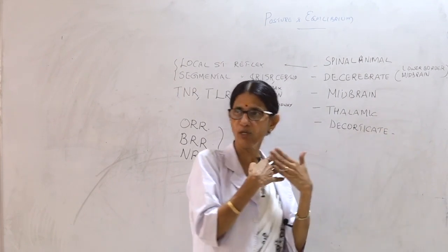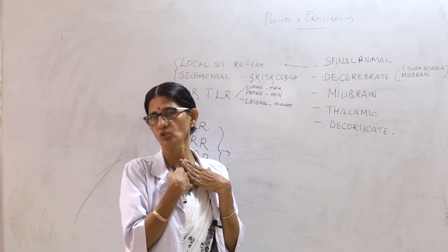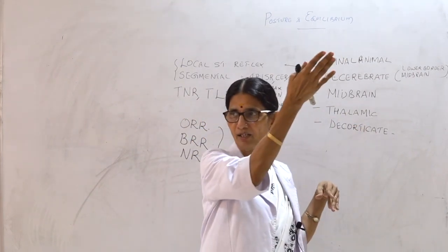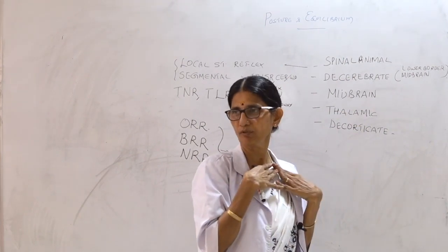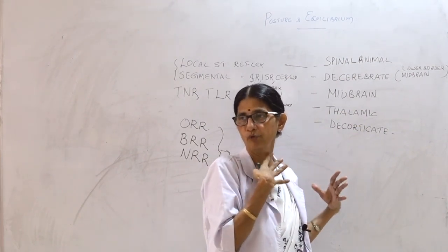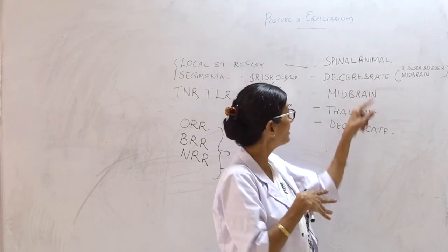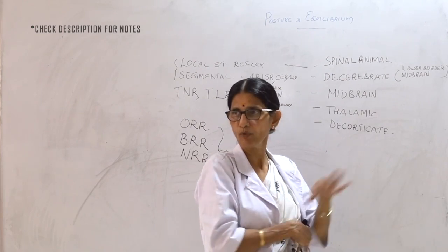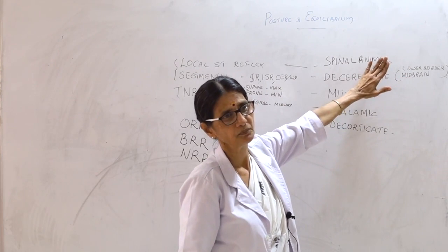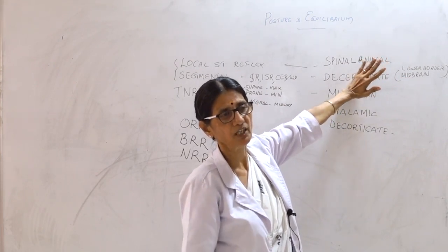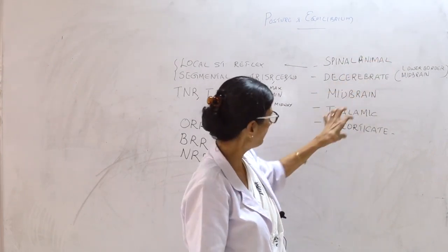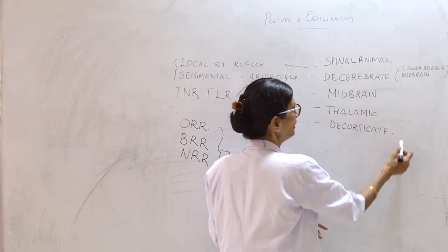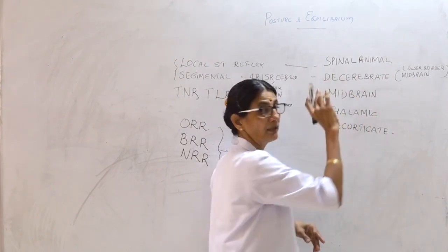Why does the upper limb undergo flexion in decorticate rigidity? The red nucleus is preserved above the level of lesion and produces contraction of the flexors of the upper limb. In decerebrate rigidity, the lesion is below the red nucleus, so its inhibitory influence is lost, resulting in hyperextension. The appearances of decorticate and decerebrate are therefore different, and decorticate is compatible with life in human beings whereas decerebrate is not.